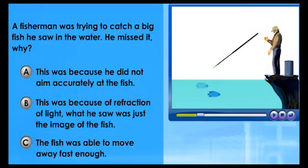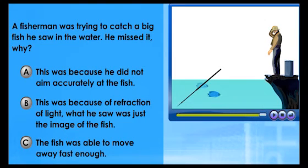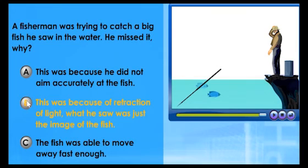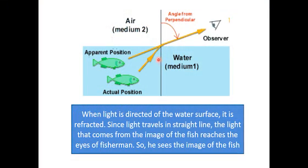A fisherman was trying to catch a big fish he saw in the water, but he missed it. Why? The answer is because of refraction of light — what he saw was just the image of the fish. When light is reflected off the water surface, it is refracted. Since light travels in a straight line, the light from the image of the fish reaches the fisherman's eye, so he sees the image and not the actual fish.